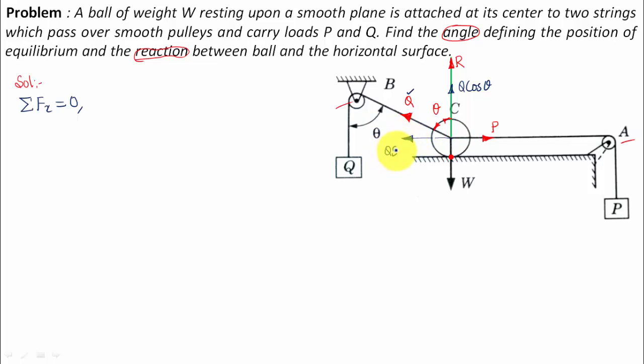Any force towards the right shall be taken as positive, any force towards the left shall be taken as negative. So P is towards the right and hence positive, Q sin theta is towards the left and hence negative. So let us write P minus Q sin theta equals zero. You can say that sin theta works out as P over Q, and if you calculate the value of theta, then theta should be equal to sin inverse P over Q. So this is the angle defining the position of equilibrium.